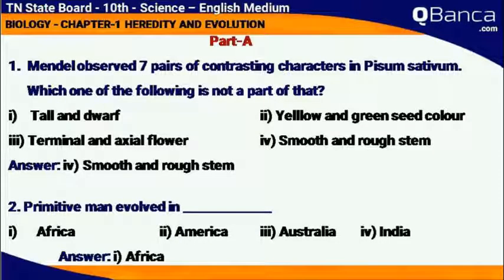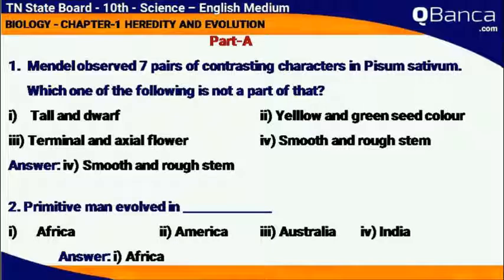Mendel observed seven pairs of contrasting characters in Pisum sativum. Which one of the following is not a part of that? Answer: smooth and rough stem.